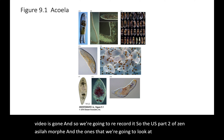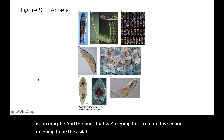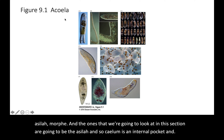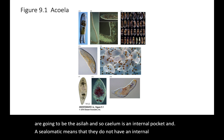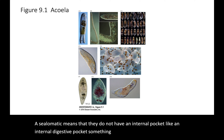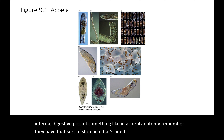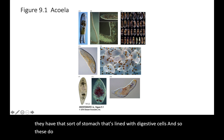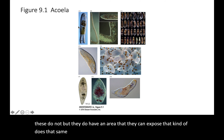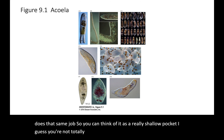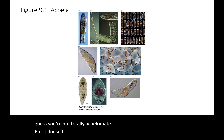The ones we're going to look at in this section are the Acoela. 'Coelom' is an internal pocket, and 'acoelomate' means they do not have an internal pocket — like an internal digestive pocket, something like what you find in coral anatomy, where they have a stomach lined with digestive cells. These animals don't have that, but they do have an area they can expose that does a similar job, so you can think of it as a really shallow pocket. They're not totally acoelomate, but it's more primitive than you'd find in other groups.